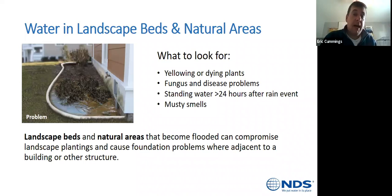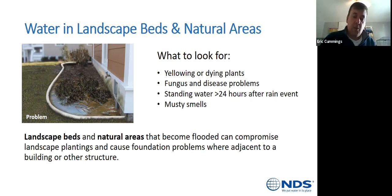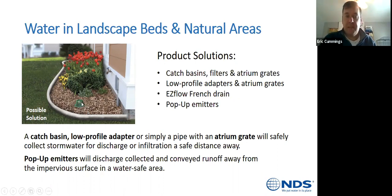For water in landscape beds and natural areas, if you have standing water in a bed and put a flat grate in with mulch around it, when the area floods the mulch will rise and eventually clog the grate. The solution is to use an atrium grate instead — it sticks up higher with openings up the sides and on the top, so no matter how much water and mulch rises, there's still an area for water to get into the catch basin.